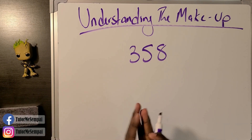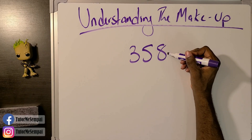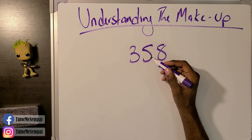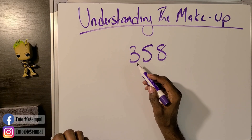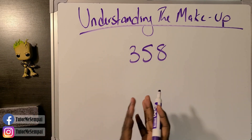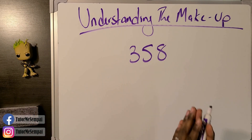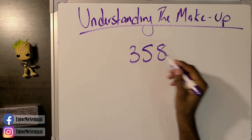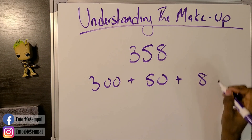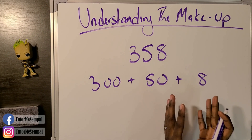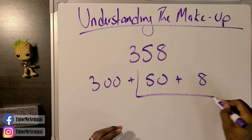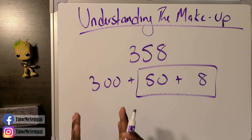How about 358? We talked about 8 — that's how many ones we have. The 5 represents how many tens we have. Can you guess what the 3 represents? Hundreds — this is going to be how many hundreds we have. In expanded form: 300 + 50 + 8. We've already discussed 50 and 8, so let's focus just on the 300.